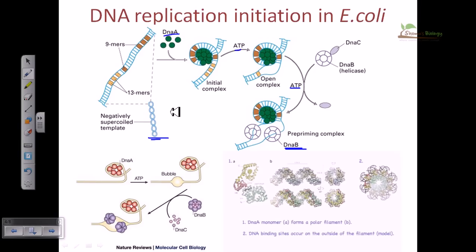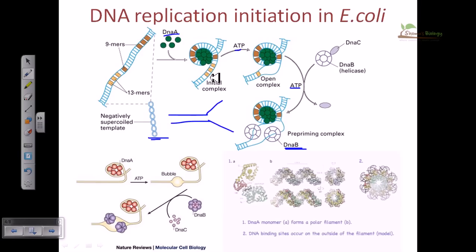Topoisomerases are enzymes that can cut the DNA strand and release tension. When we start to open up a DNA for replication to make the fork, it creates tension in other regions. In this case, we must produce a position that will release the tension by melting some of the DNA strands in between. DNA A achieves this by introducing a positive supercoil into the DNA segment.